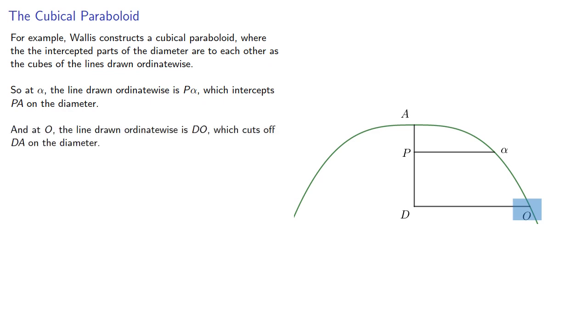and at O, another point on the curve, the line drawn ordinate-wise DO, which cuts off DA on the diameter, and the defining property of this curve is the ratio PA to DA is the same as P alpha cubed to DO cubed.